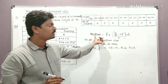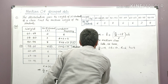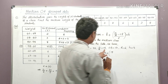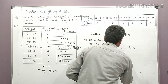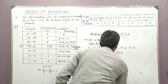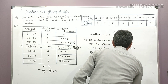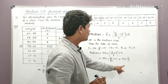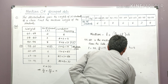Substituting: Median = 55 + (15 − 13) / 6 × 5 = 55 + 2/6 × 5. Simplifying: 2/6 = 1/3, so we get 55 + 5/3. Dividing 5 by 3 gives 1.66, so median ≈ 56.66 kg.